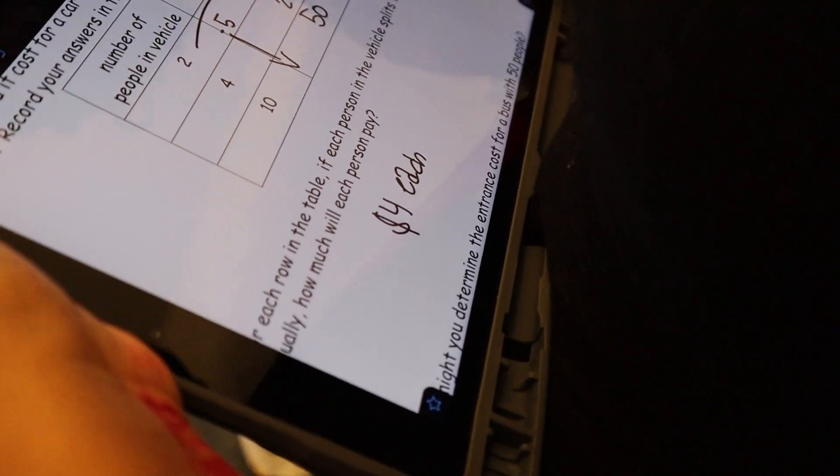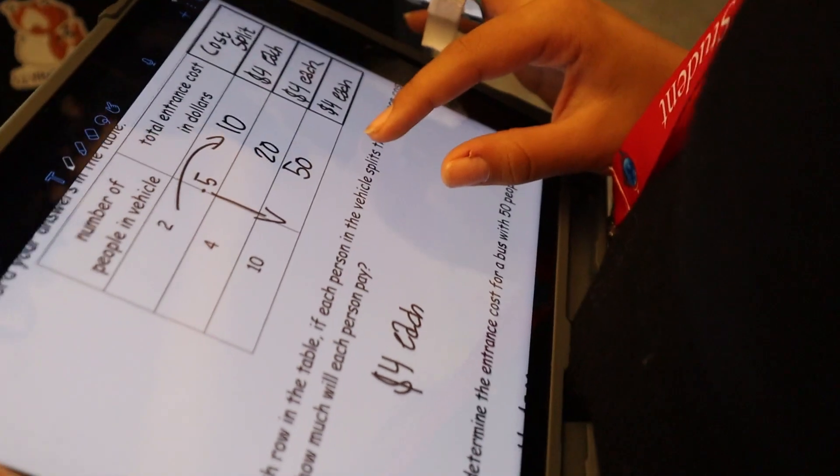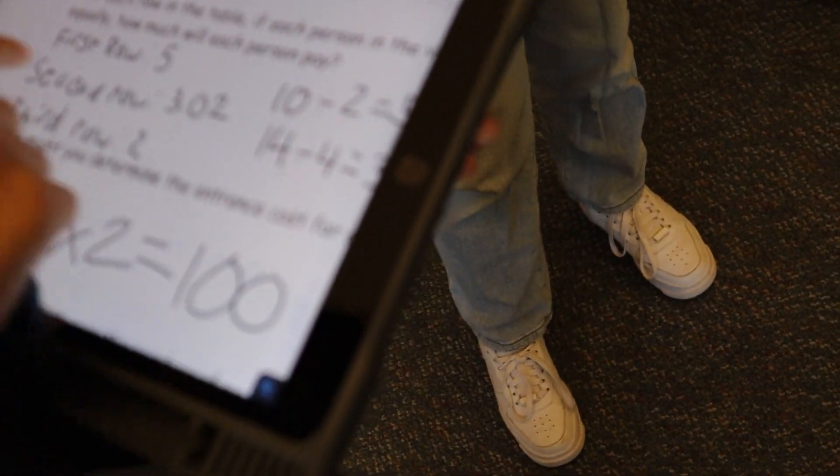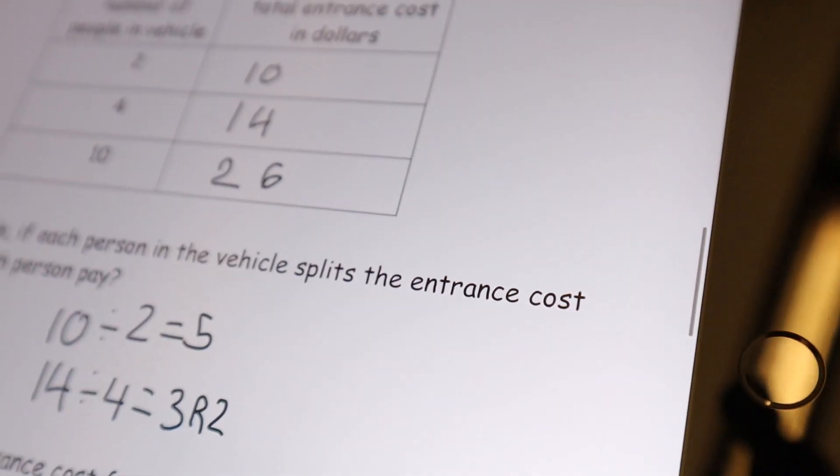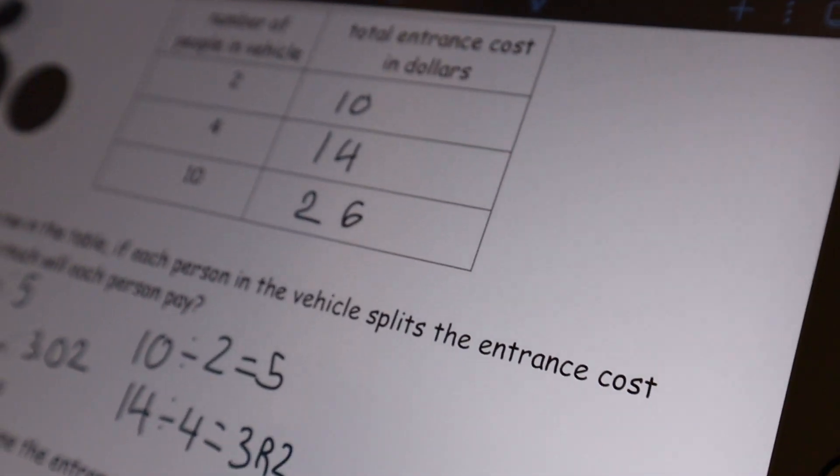What did you get? I got a lot of answers because it said for each row. So I did each row in the table. What do you mean you got different answers to each row? Can you tell me more about that? So when it says each row in the table, I decided to divide the entrance by how many people are in the vehicle.